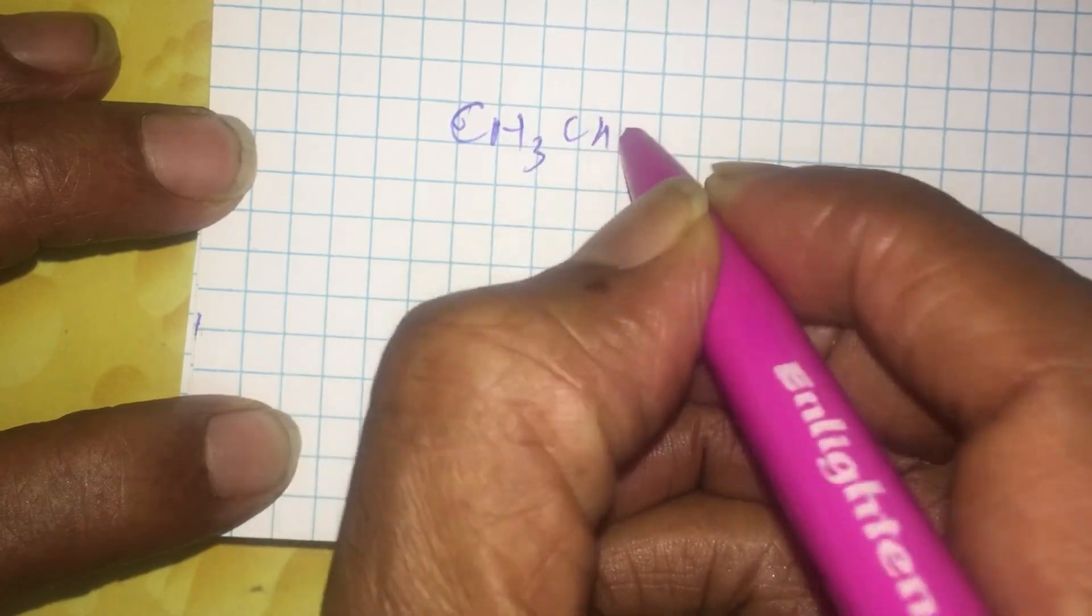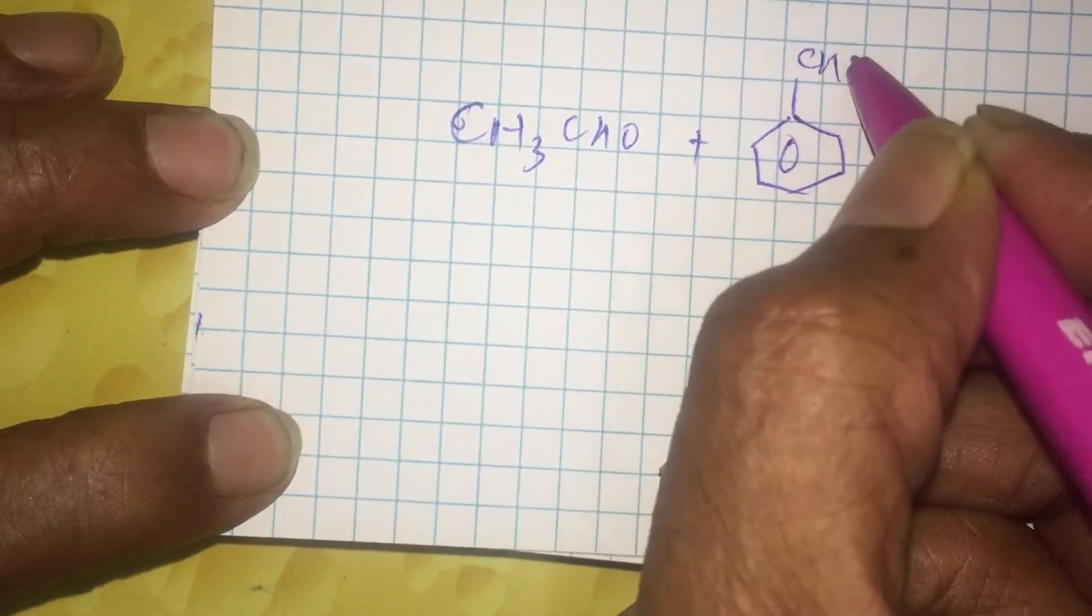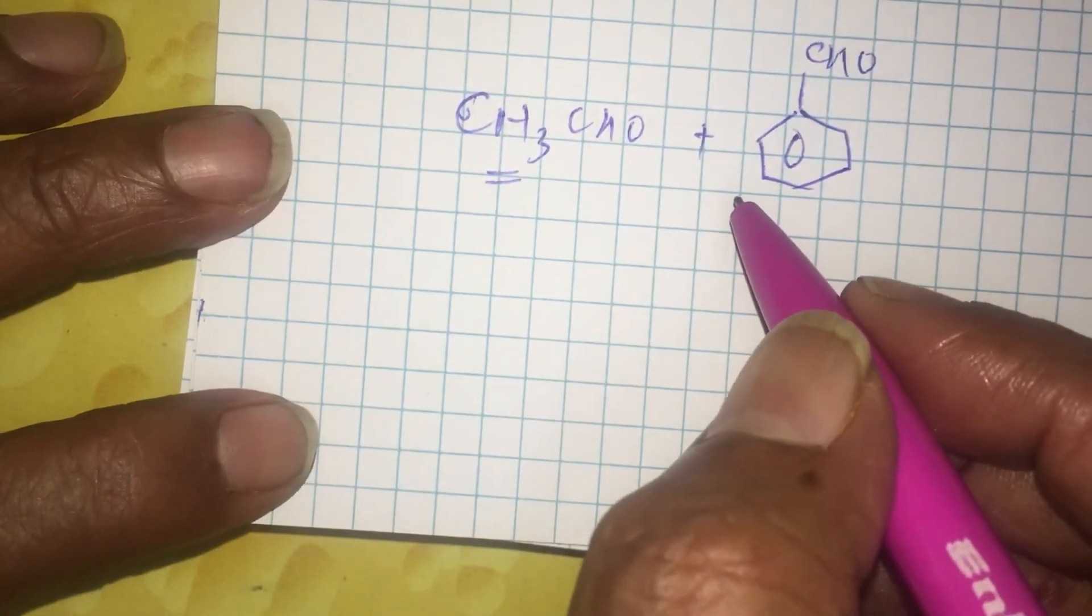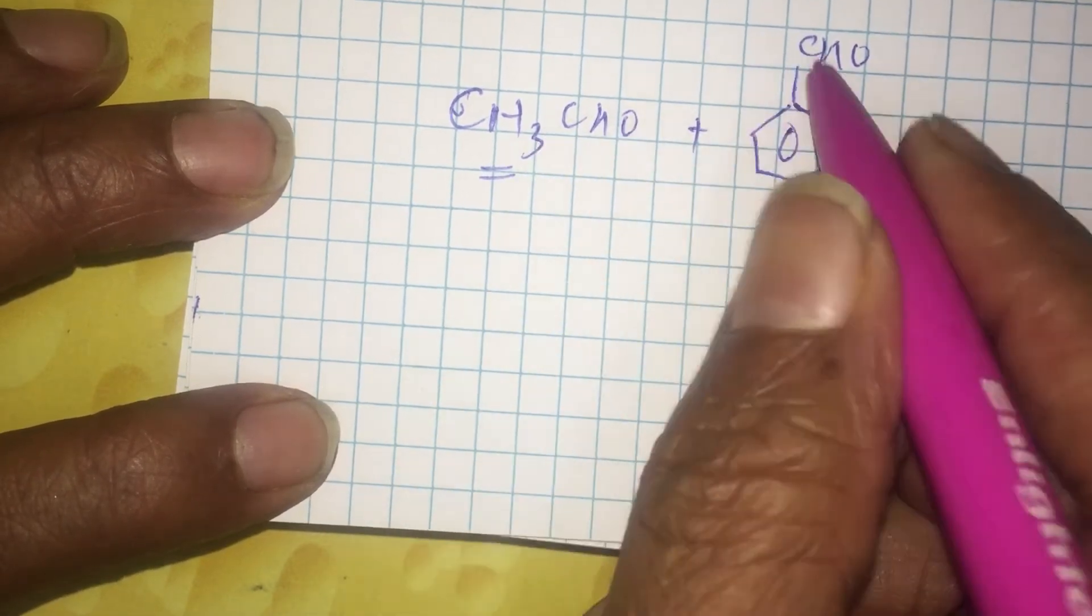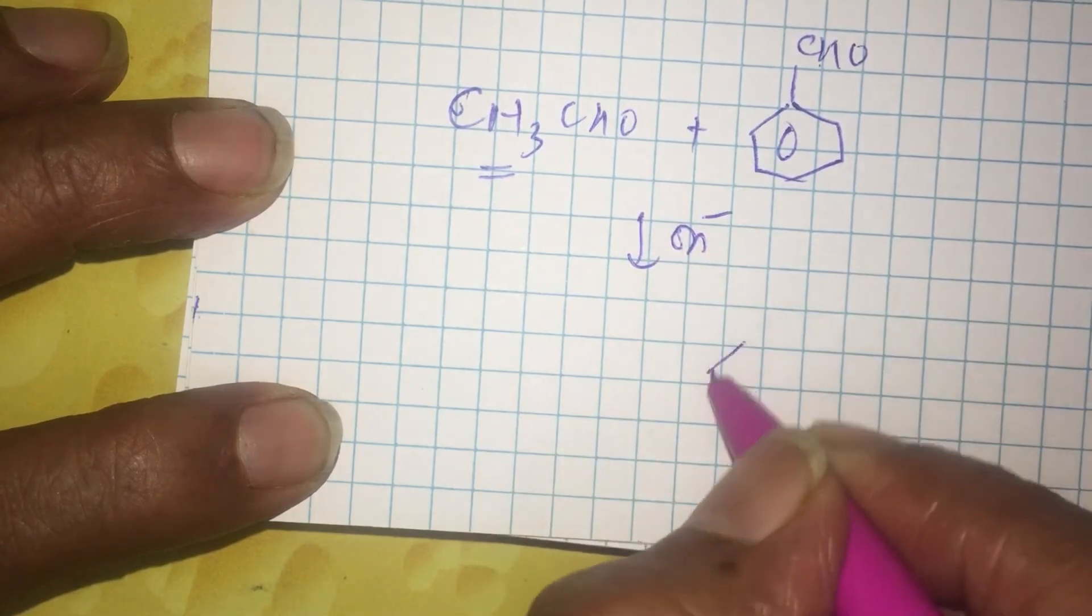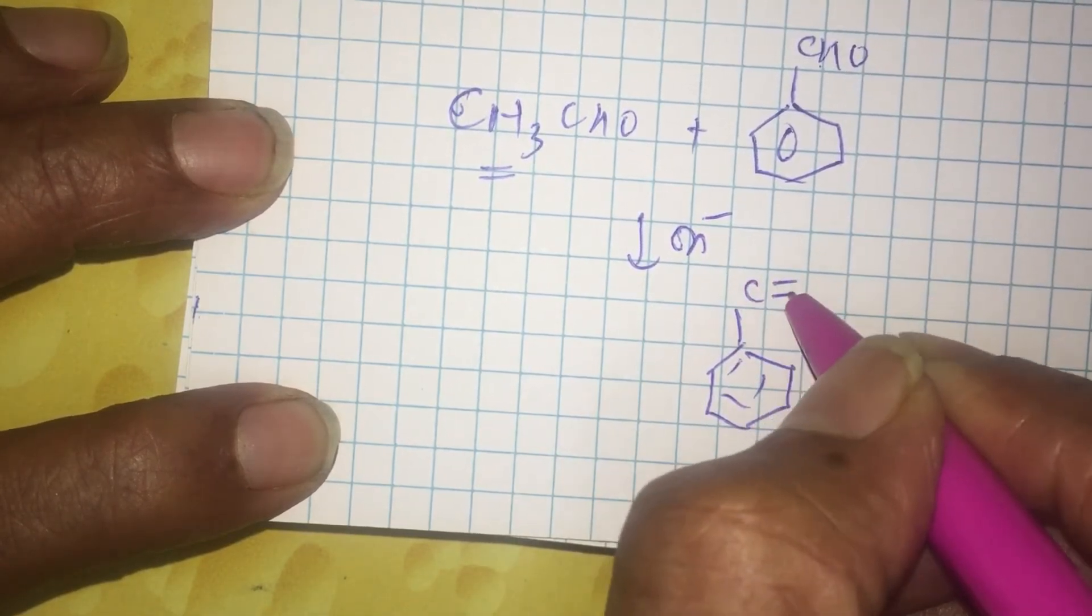The acetaldehyde molecule can also react with benzaldehyde. Benzaldehyde has no alpha-hydrogen. So, only acetaldehyde should make carbanion or enolate nucleophile that attacks this carbonyl carbon. So, in presence of base in this cross-aldol, you will be getting C=O.